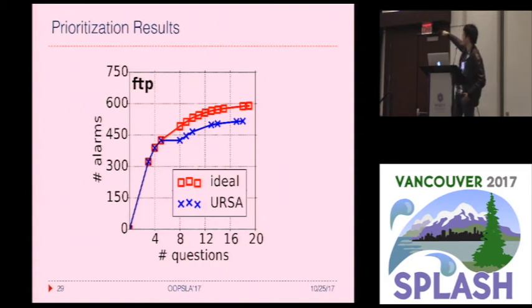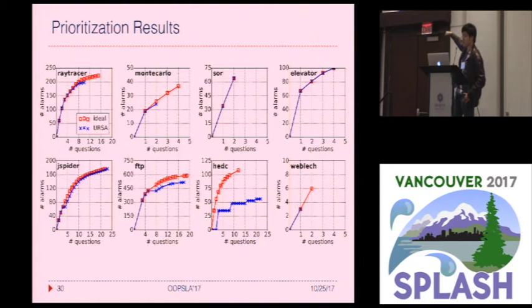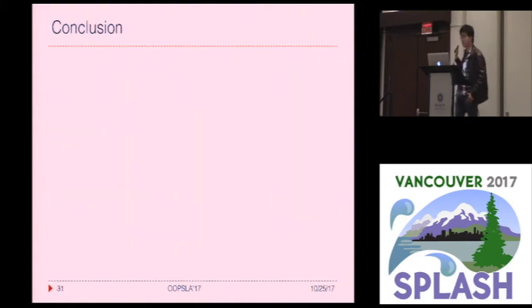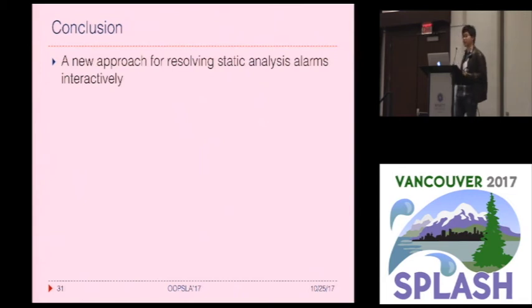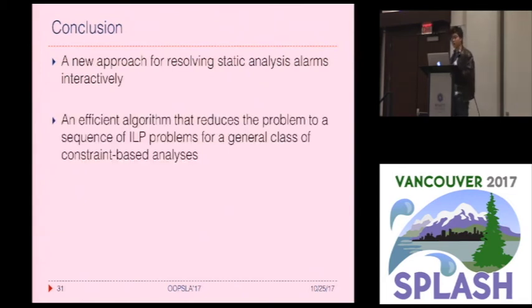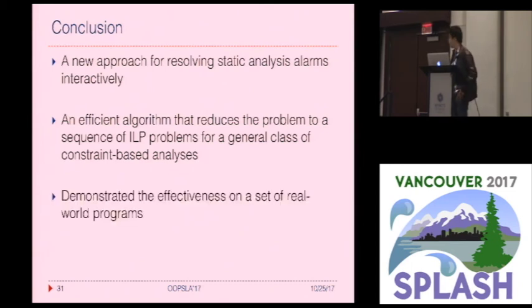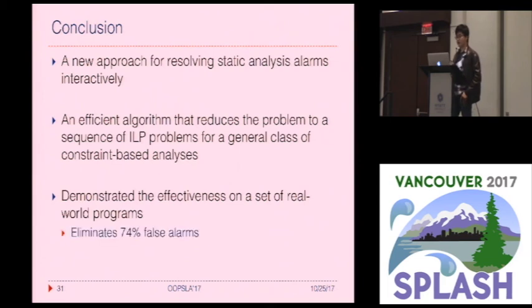We show results on benchmark FTP here, and on other benchmarks we get similar results. To conclude: first, we introduce a new approach for resolving static analysis false alarms by combining a fully sound but imprecise analysis with an unsound but precise heuristic via human interaction. Second, we propose an efficient algorithm reducing the problem to a sequence of integer linear programming problems for a general class of constraint-based analyses. Finally, we demonstrate the effectiveness empirically on real-world programs — on average eliminating 74% of false alarms with a 12x payoff per question. Thanks for your attention, I'm happy to take questions.